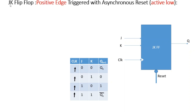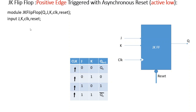We are writing the design module for the JK flip-flop which is positive edge triggered and has asynchronous reset which is active low. The first line declares the module. We will declare all the input ports — from the figure it is clear that the input ports are J, K, clock, and reset. The output is Q, and since we are using behavioral modeling, Q should be declared as a register type.